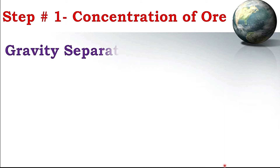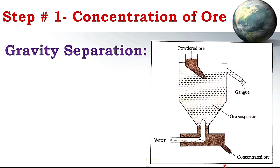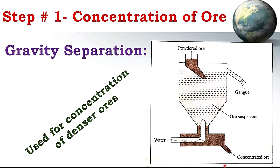Step one is concentration of ore. The first process is gravity separation, used for ores that are heavier and denser than water. The ore is mixed with water and allowed to settle down. Due to its high density, the ore settles at the bottom, while gang particles or impurities float with the water and can be separated. In this way, ore is separated from impurities.